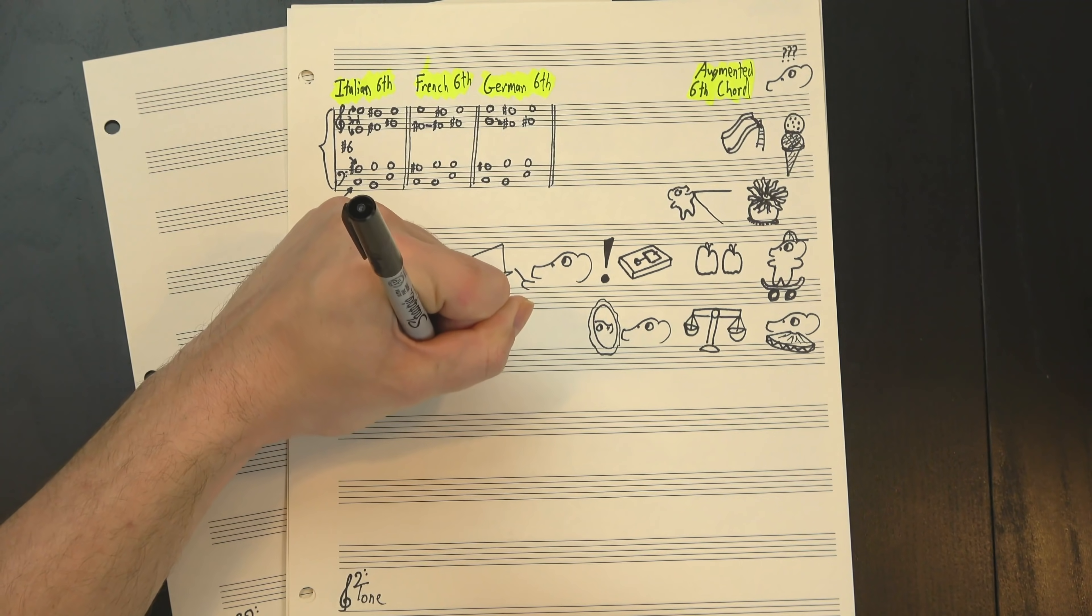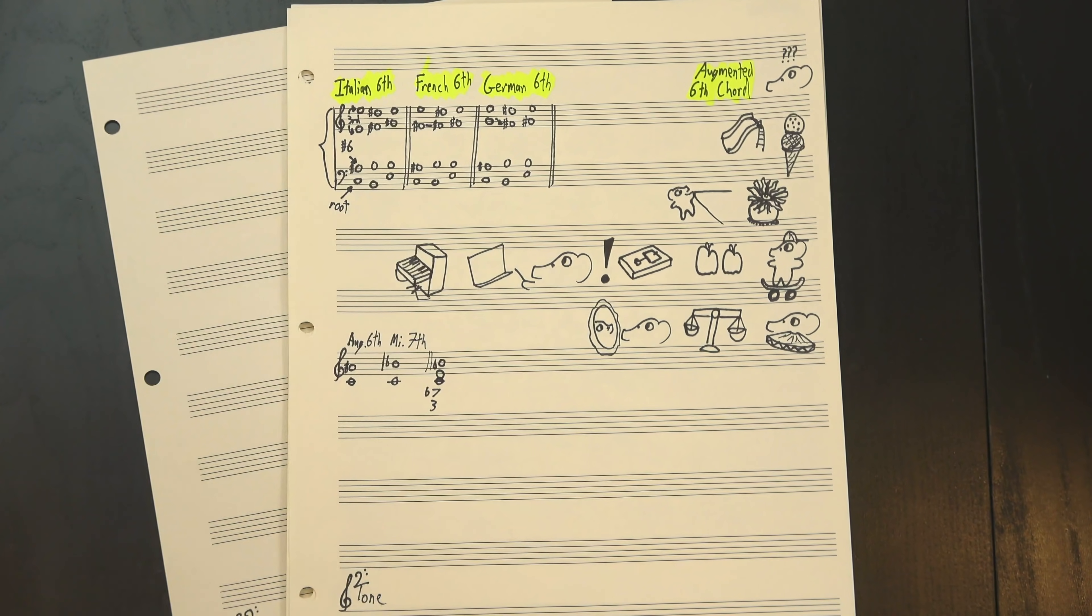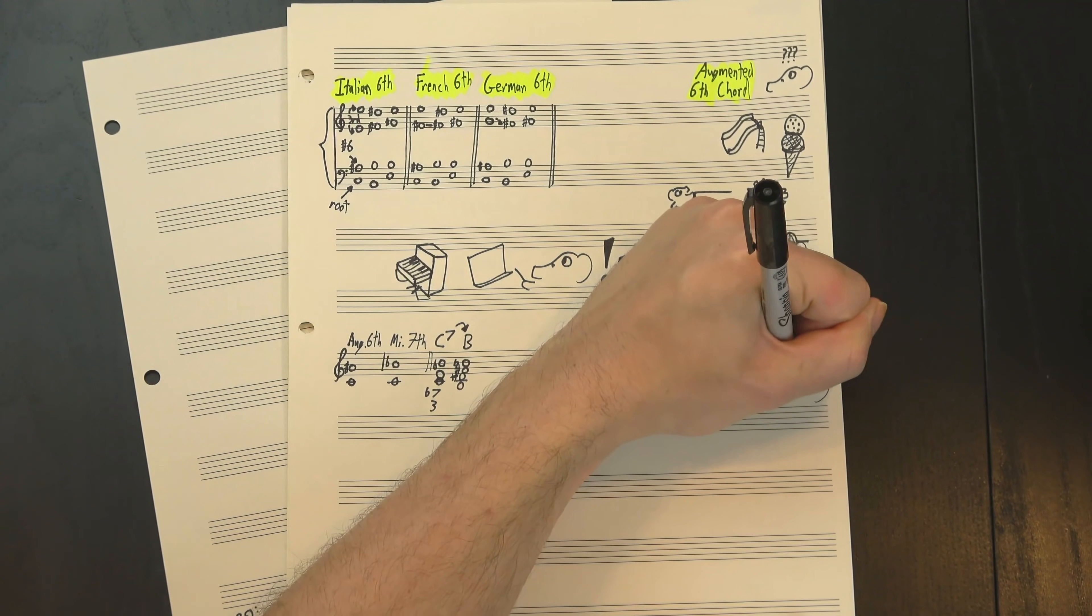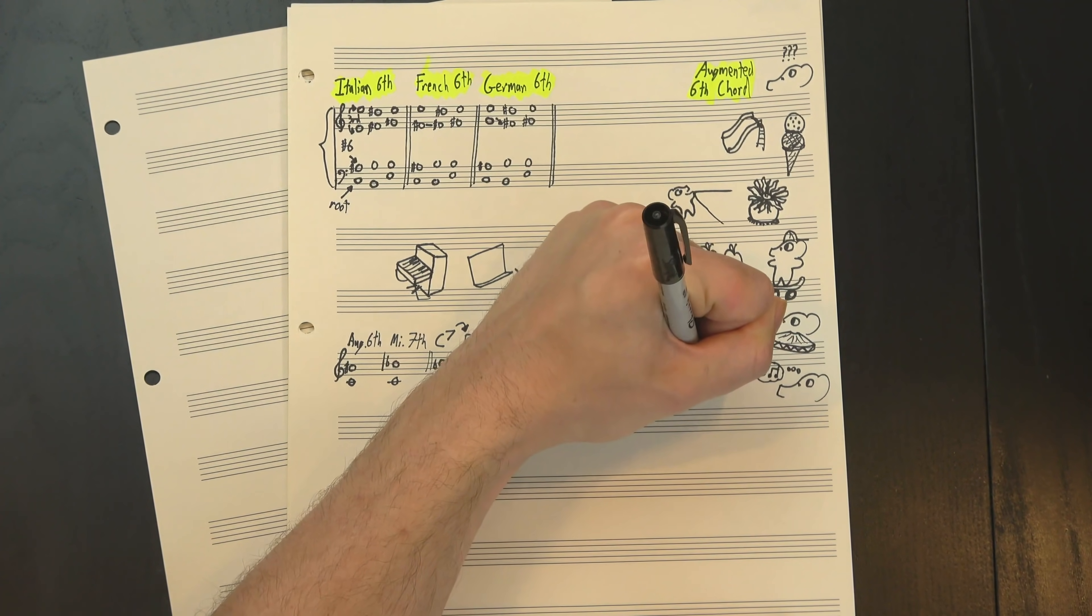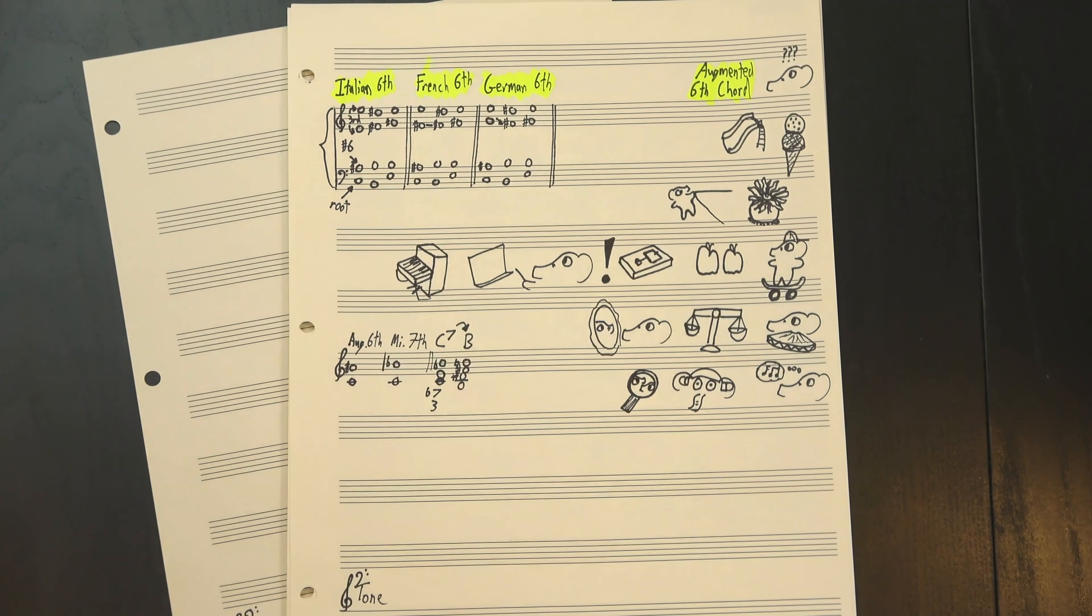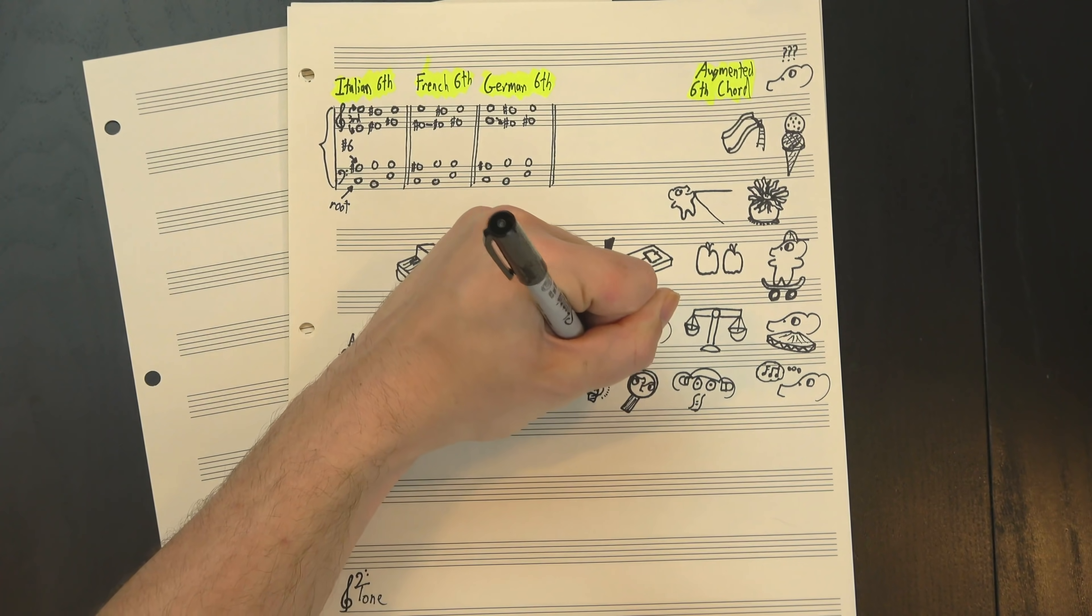Which means our augmented sixth chords all have a major third and a minor seventh, making them, in effect, dominant seventh chords resolving down a half-step. They weren't necessarily viewed that way at the time, but the only way to tell by ear whether a chord is a dominant seventh or an augmented sixth is to look at the surrounding context. Keep that in mind, it's gonna come up again later.